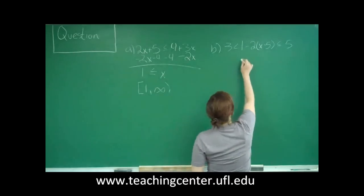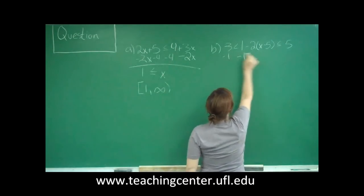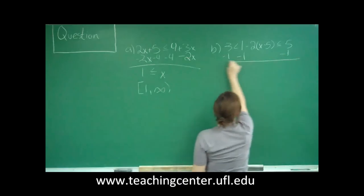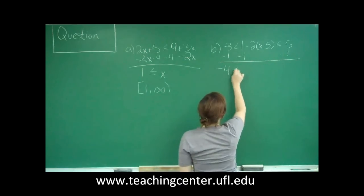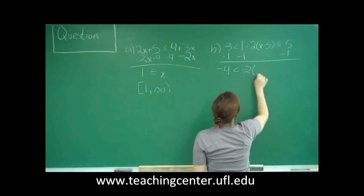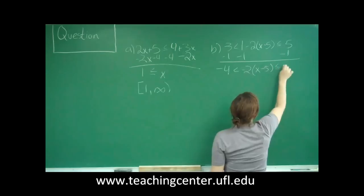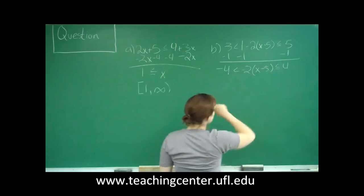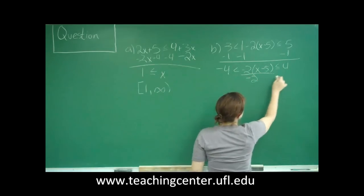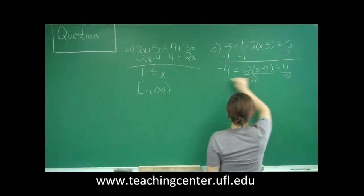So my first step is going to be subtracting 1 from every side. And I get negative 4 is less than negative 2 times x minus 5, so this is equal to 4.